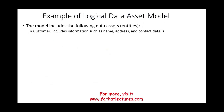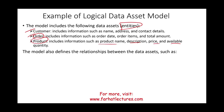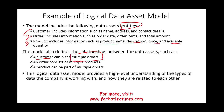Examples of the logical data asset model include the following entities: customer, with customer information; order; and product, which could include product name, description, price, available quantities, and so on. This model also defines the relationships between the data assets. For example, a customer could have multiple orders; an order will consist of multiple products; and a product can be part of multiple orders. The logical data asset model provides a high-level but more detailed understanding of the types of data the company works with and how they relate to each other.